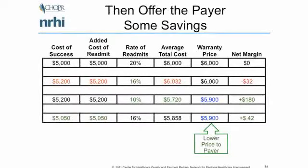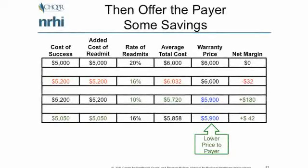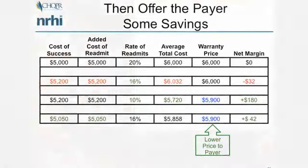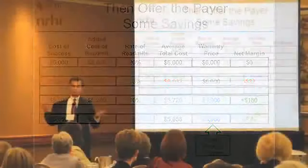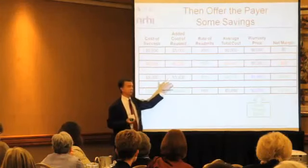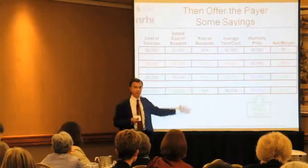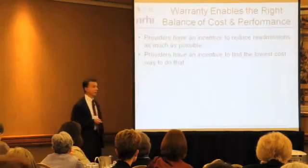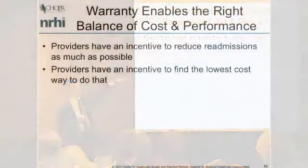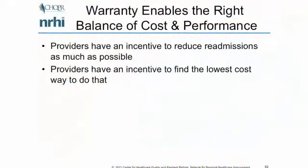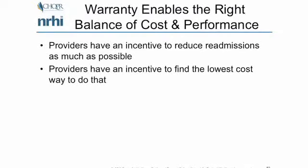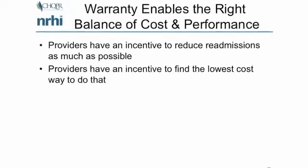The cost of the intervention needs to be offset by savings from reduced readmissions. Then I can go to the payer and say I'm going to give you this care at a lower cost. The challenge for people running these programs is how to do them efficiently and get a big enough impact to achieve return on investment. This approach is better because the provider has both a financial and quality incentive to reduce readmissions, and also an incentive to find the lowest cost way to do it.